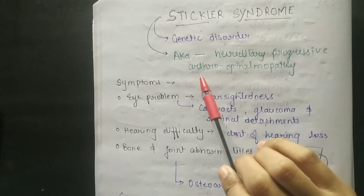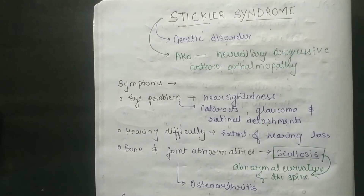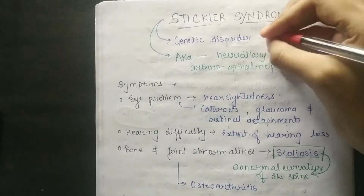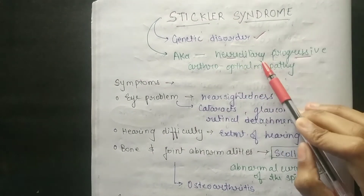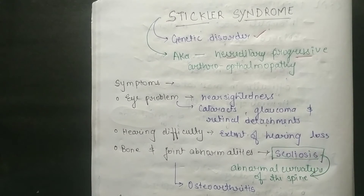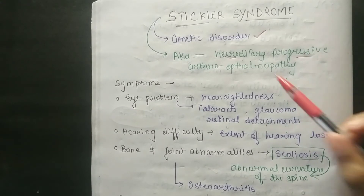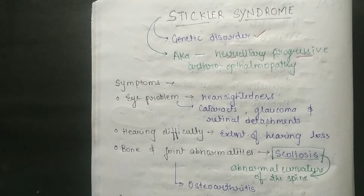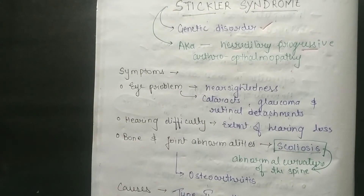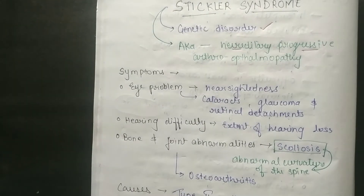We call it Hereditary Progressive Arthro-Ophthalmopathy. It is a genetic disorder. 'Hereditary' means it is an inherited disorder. 'Ophthalmopathy' refers to eye-related problems, and 'arthro' refers to bone and joint disorders.